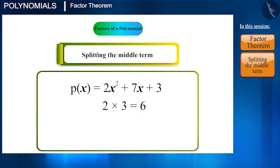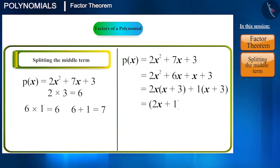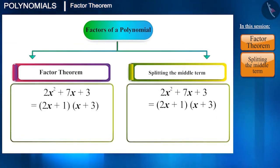And then, find two such numbers whose product is 6 and sum is the coefficient of the middle term, that is 7. The numbers whose product is 6 and sum is 7 are 6 and 1. Now, we will split the middle term and write it like this. So, here we can see that in both the situations, we get the same factors.